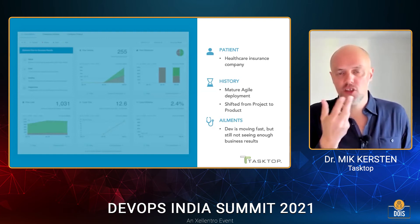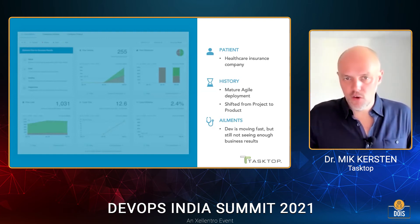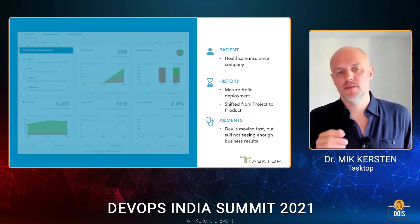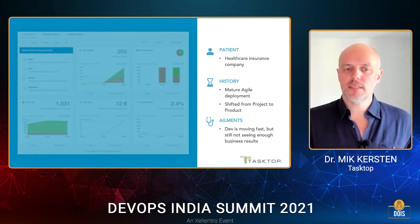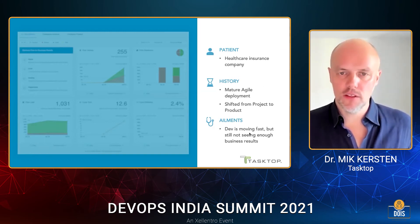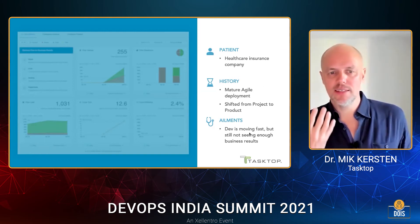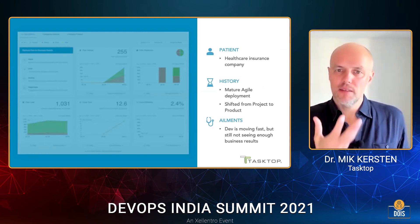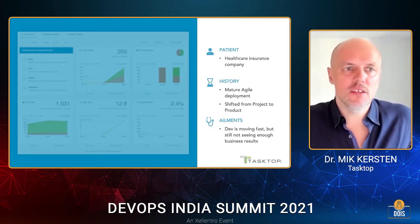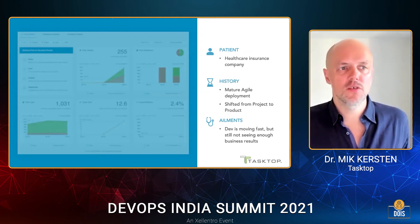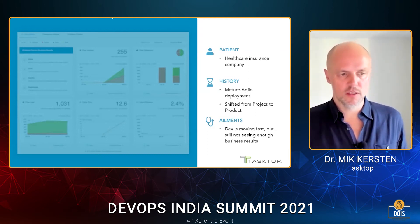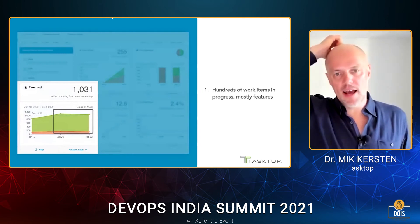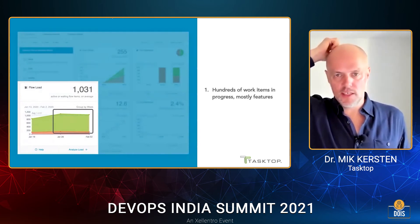The flow metrics don't depend on you having shifted from project to product — they will actually help you make the case for shifting from project to product, make the case for more investment in your DevOps delivery pipeline, and make the case for more business agility. In this case, there's actually been an organizational shift from project to product. However, the ailment is a sense that development teams are moving fast, but not enough business results are being delivered.